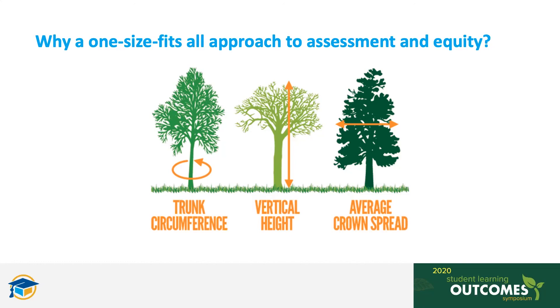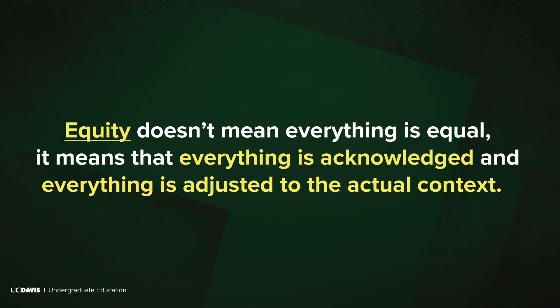I'd like to propose that students, like trees, have multiple ways to grow and can succeed at multiple outcomes. Maybe not all of them, and that might be okay too. Equity doesn't mean everything is equal. It means that everything is acknowledged, and everything is adjusted to the actual context — not some ostensibly blind standard that we measure, which it turns out we might actually be measuring something else.